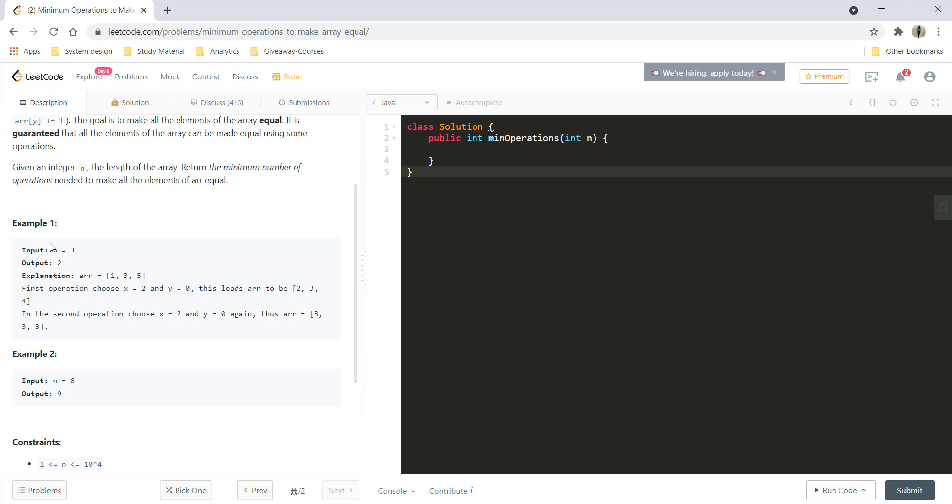In the first example, we are given the input as 3 and so my array would be 1, 3 and 5. In the first operation, I can take these two and then increment this by 1 and decrement this which would make it 2, 3 and 4.